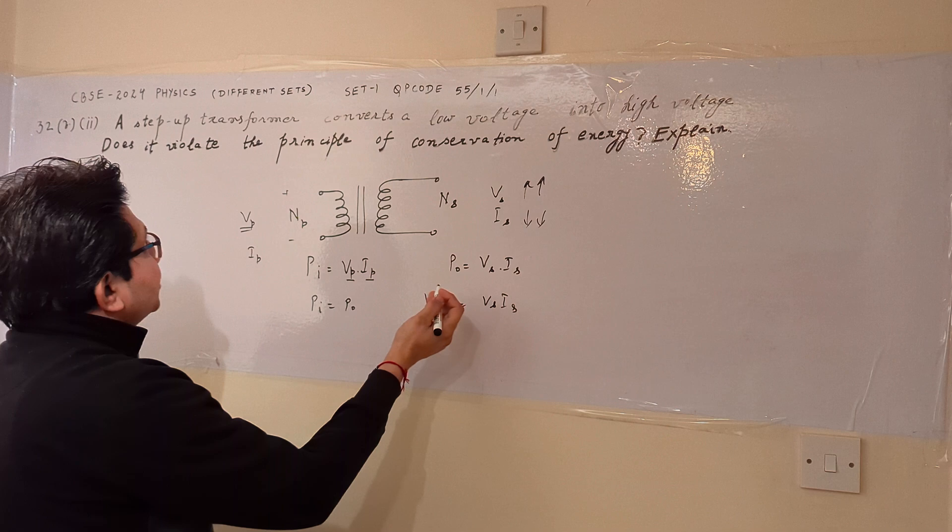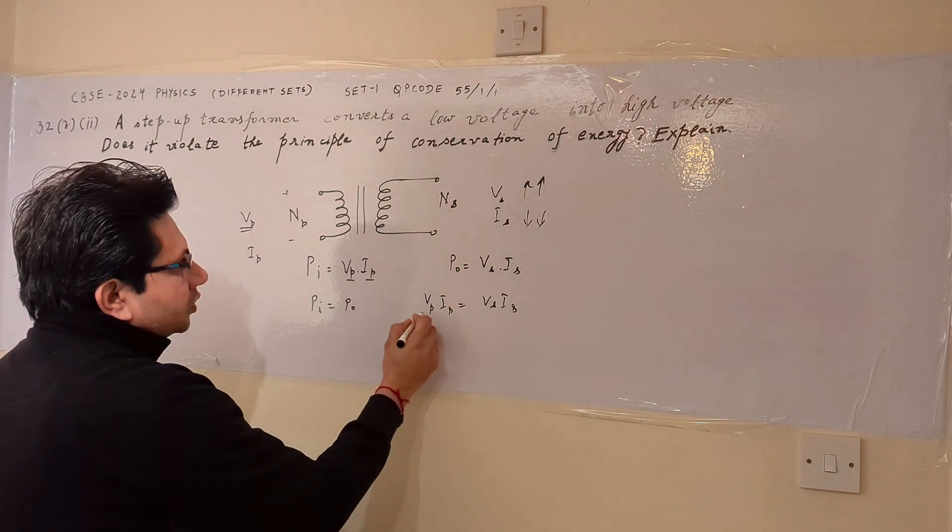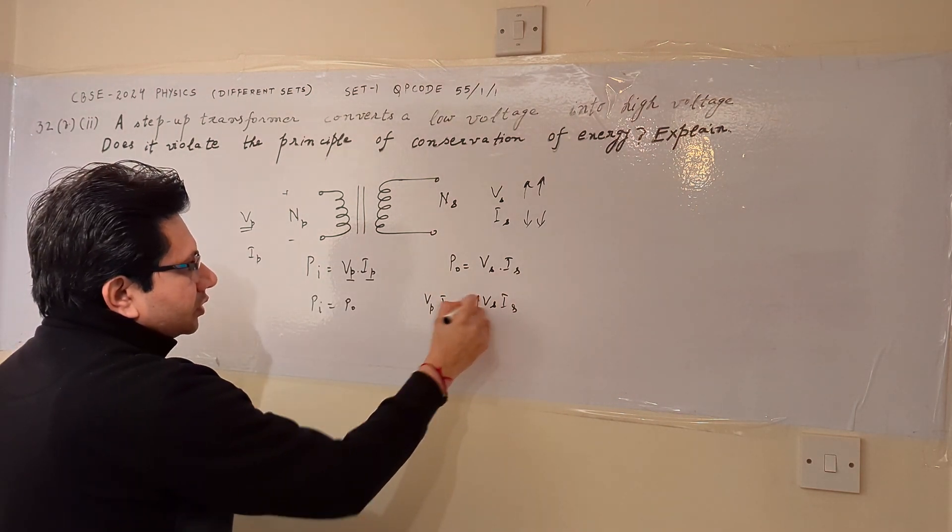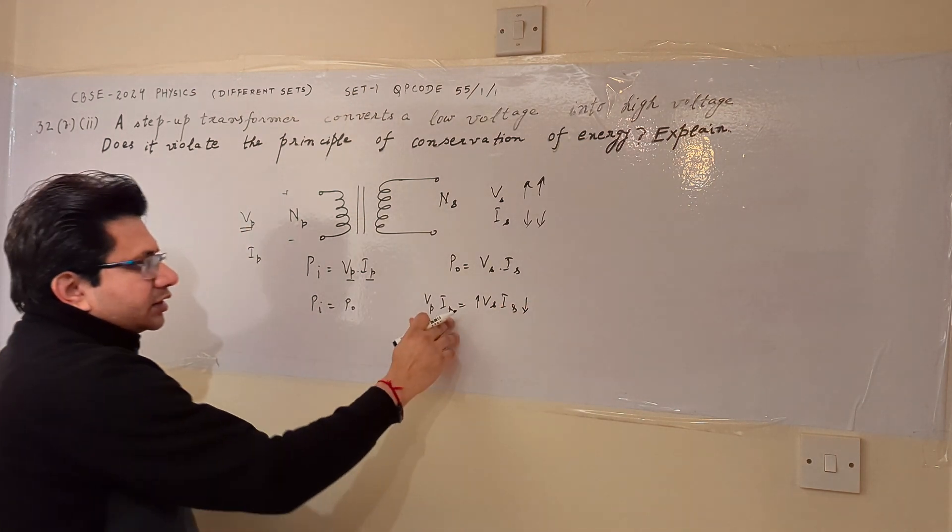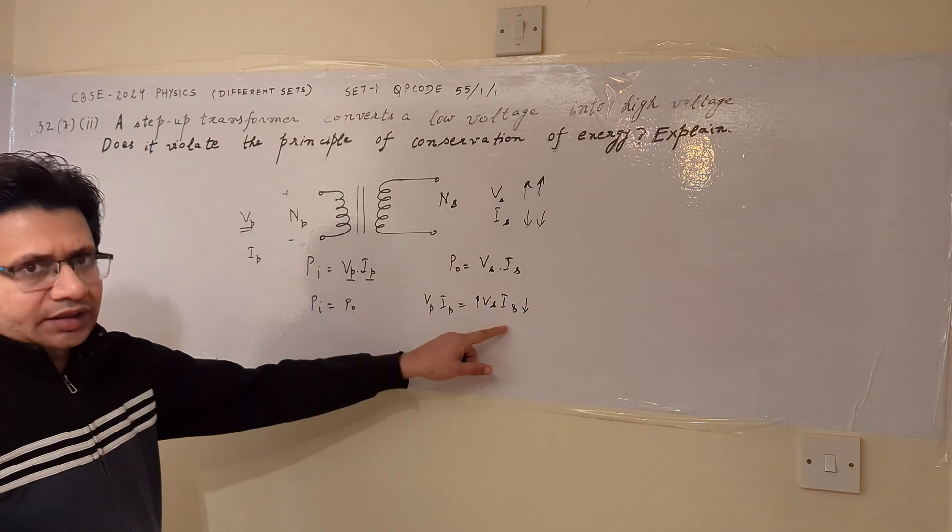So for example, there is a step up transformer. In a step up transformer, the secondary side, the voltage is going up. So correspondingly, the current is less as compared to the primary current at the secondary side.